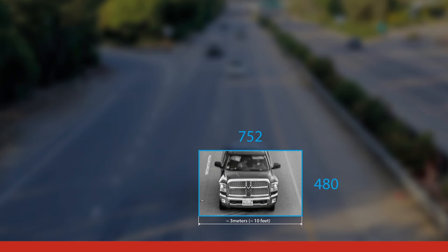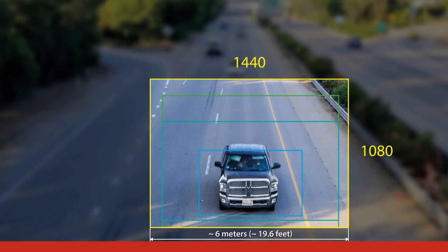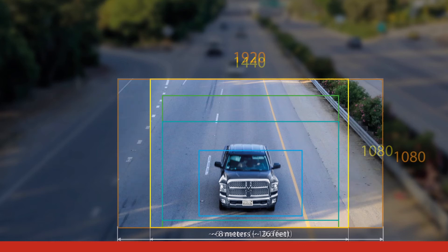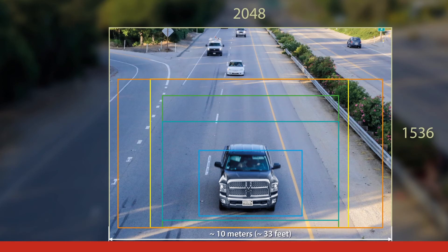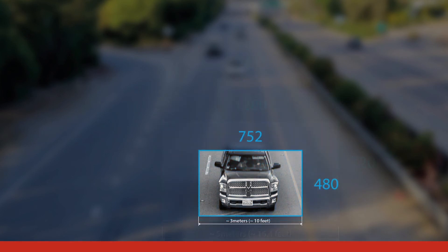Depending on business needs, one can choose higher resolution cameras covering more than one lane with longer processing times, or lower resolution cameras, each covering only one lane with faster image processing.